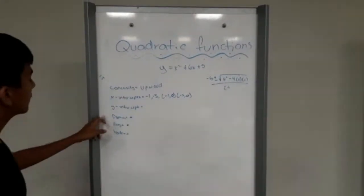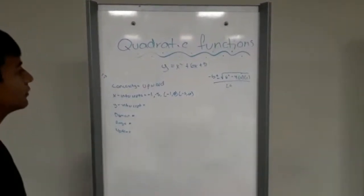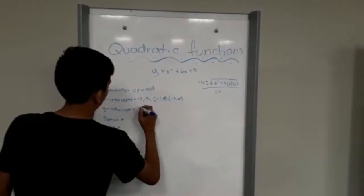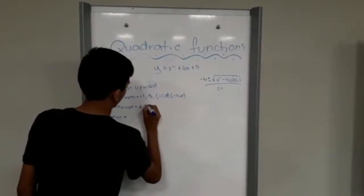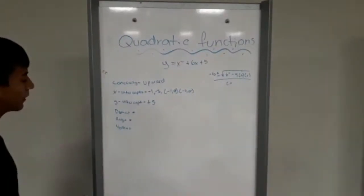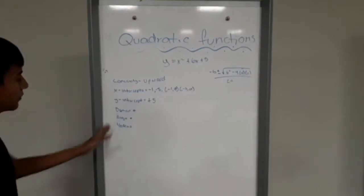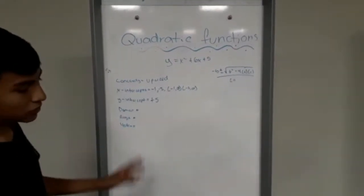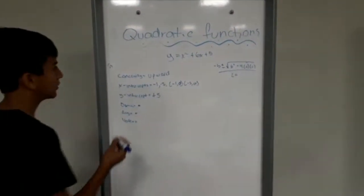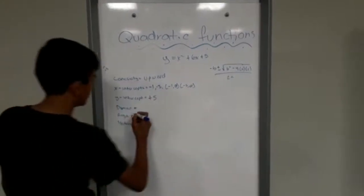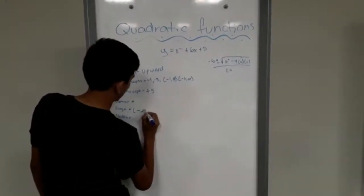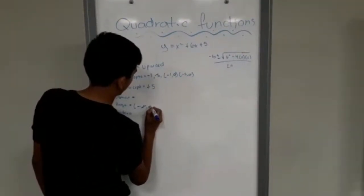Then we're going to get the y-intercept, and it's the independent term, so it is positive 5. The domain — we will need to do the graph first — but the range in quadratic functions will be minus infinity to positive infinity.